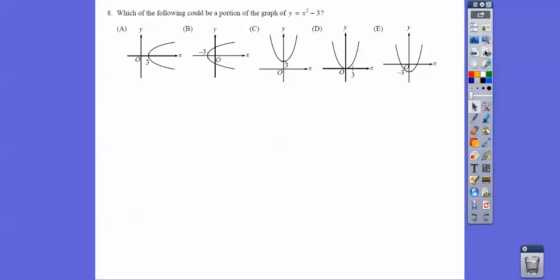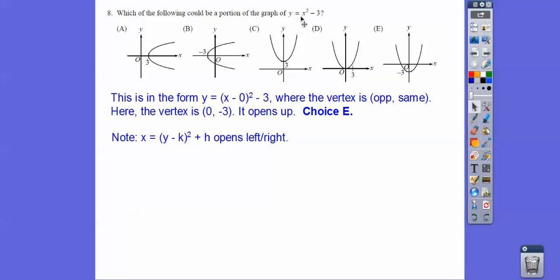All right, which of the following portions could be the graph of Y equals X squared minus 3? Well, this is in the form of X minus 0 squared minus 3, so this is a parabola.